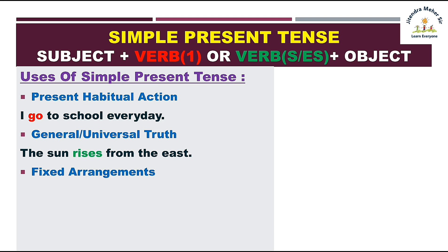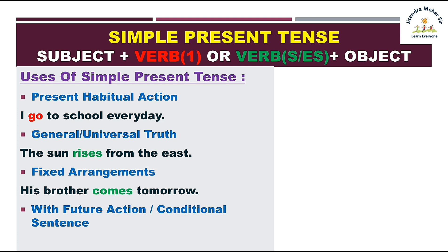Next — fixed arrangement: agar koi kaam fix hai aur woh usi time pe hone wala hai, tab bhi hum simple present ka istamal kar sakte hain. Jaise 'His brother comes tomorrow.' Aur future action with conditional sentence — jab do sentences ho aur ek mein conditional ho, toh future sentence ke saath simple present istamal kar sakte hain. Jaise: 'If you study well, you will not fail.' Toh in char tariko se simple present tense ka istamal kiya jata hai.